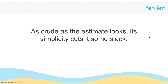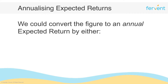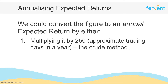Having said that, as crude as the estimate looks, its simplicity really does cut it some slack. More importantly, remember that the 0.13% expected return represents the daily expected return. If you're a longer-term investor, you're probably more interested in the annual expected return. We can annualize this using two different methods — one more crude than the other. The easiest way is to simply multiply the daily expected return by 250, because there are approximately 250 trading days in a year. Markets are closed on weekends and public holidays, so on average trading days across the globe is about 250.